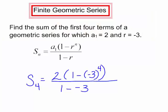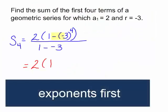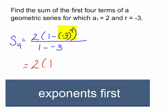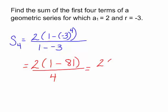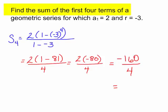Now let's simplify this. I need to do exponents first, so I will have 1 minus 81 — since negative 3 to the fourth is 81. In the denominator I will have 1 plus 3, which is 4. I will have 2 times negative 80, divided by 4. The sum of the first four terms in this geometric series is negative 40.